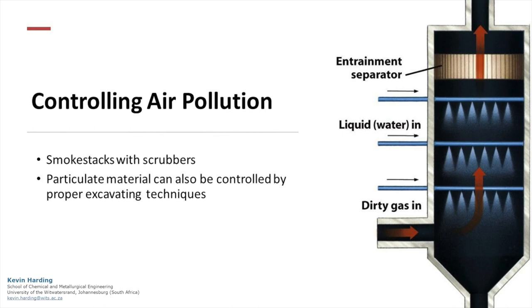A second piece of equipment to control air pollution is a scrubber. Dirty gas enters the bottom and liquid water or other solvent is sprayed over the gases. As the gas rises through the unit, clean air is removed from the top while dirty water is collected at the bottom. This dirty water can then be collected and purified.